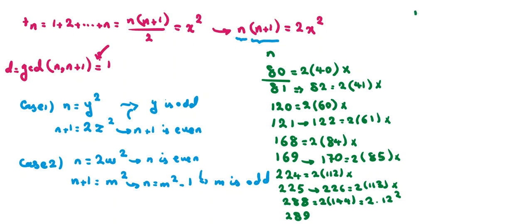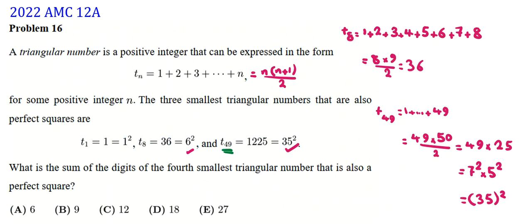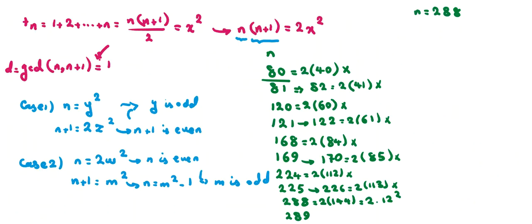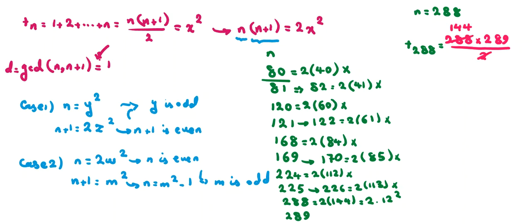We found the next n is 288. The problem asks for the sum of digits of the fourth smallest triangular perfect square, so we calculate T_288. Using the formula T_288 = 288 × 289 / 2 = 144 × 289.